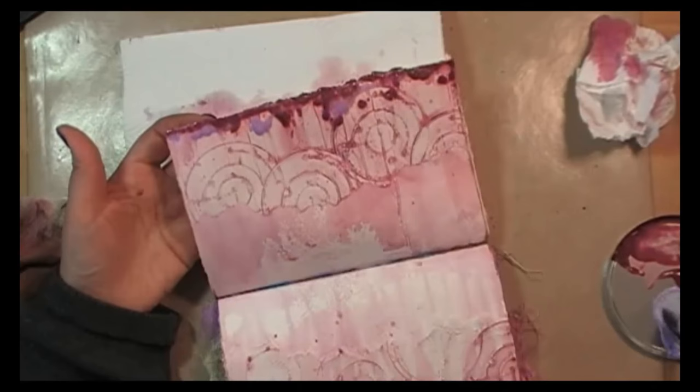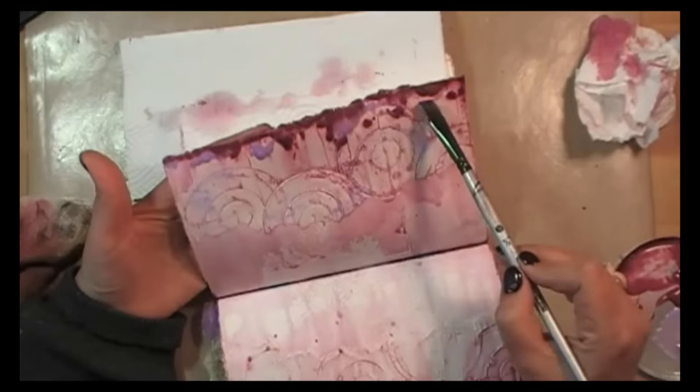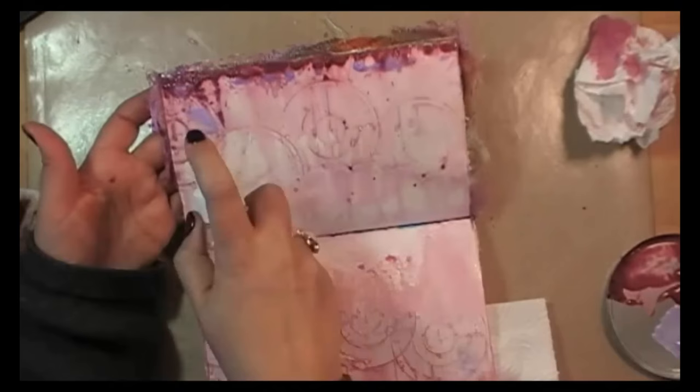Now this is where you can start to see the tree showing up in the white of the paper. That's why I wanted to use a clear embossing powder to keep that white space in the middle.